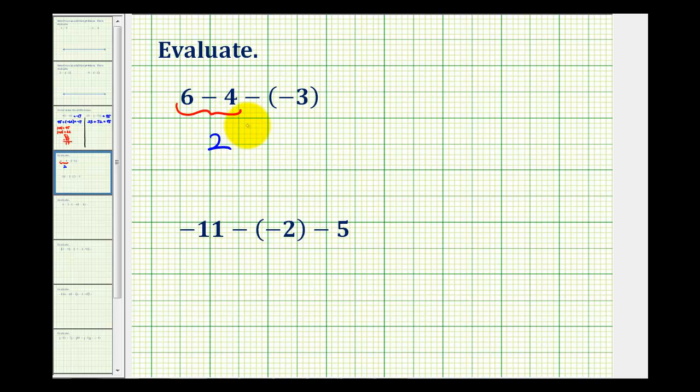So we can rewrite this as two and then minus negative three is equivalent to plus a positive three. Remember subtracting a negative three is the same as adding a positive three, and then two plus three is equal to five.